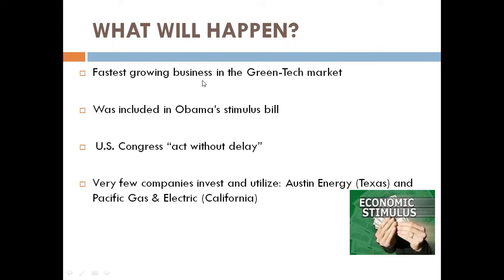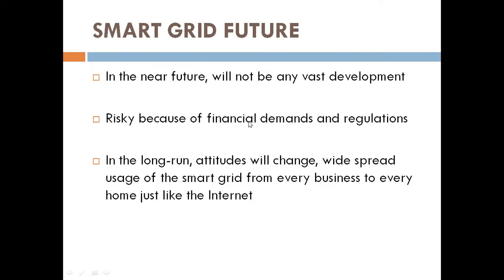Smart grid is one of the fastest growing businesses in the green tech market. It was included in the president's stimulus bill and the U.S. Congress acted without delay. Very few companies currently invest in and utilize it — Austin Energy in Texas and some Californian companies. In the near future, there will not be vast development due to financial demands and regulation.